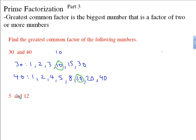One more example: 5 and 12. What are all the factors of 5? Well, the factors of 5 are 1 and 5. Factors of 12 are going to be 1, 2, 3, 4, 6, and 12.